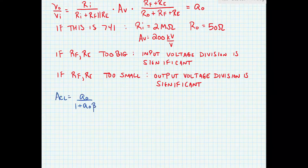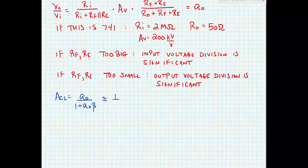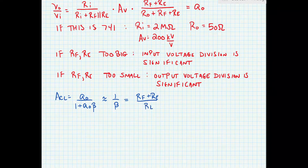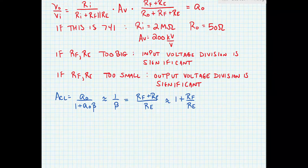The closed-loop gain is equal to A0 divided by 1 plus A0 times beta. Assuming we haven't impacted A0 by making RF and RE too small or too big, this is approximately equal to 1 over beta. 1 over beta equals RF plus RE divided by RE, or approximately 1 plus RF divided by RE. This is the expression we know to be true for the non-inverting configuration of an operational amplifier, so feedback has given us the result we expect.